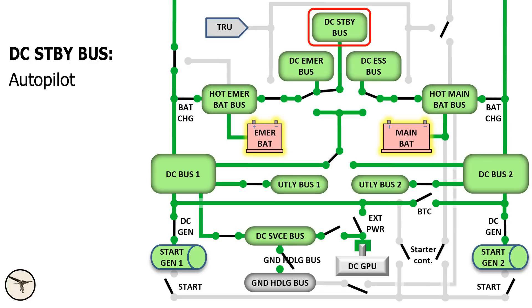DC standby bus: Autopilot, flaps control, landing gear control. VOR ILS1, GPS1, MCDU1.